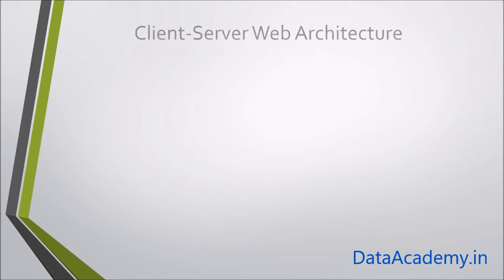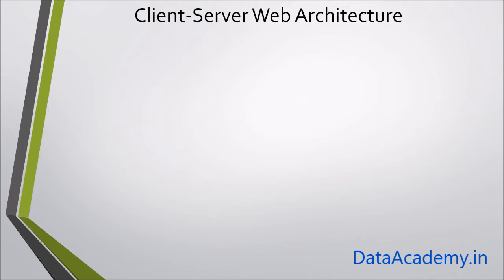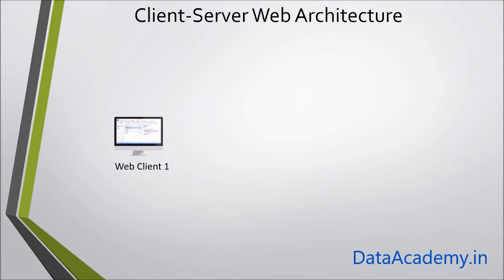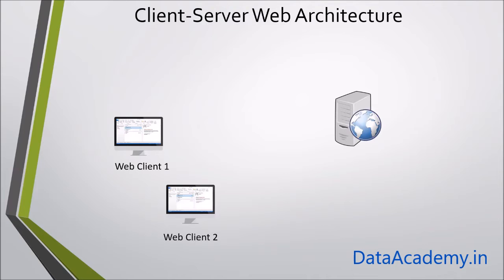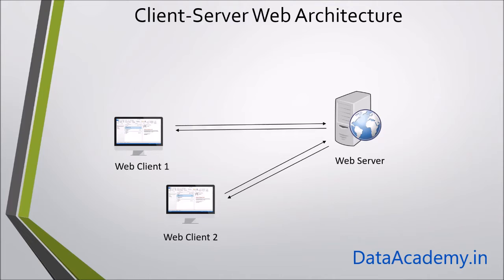REST API is an architecture or design pattern that allows two systems to communicate over the web — we know this as client-server architecture. However, there are some problems with client-server architecture. A typical client-server architecture includes multiple clients and maybe a single server. In the diagram you can see there are two clients exchanging data with a server.